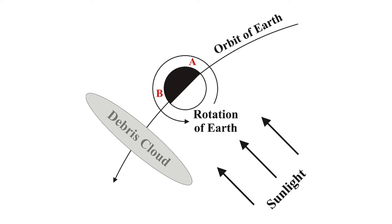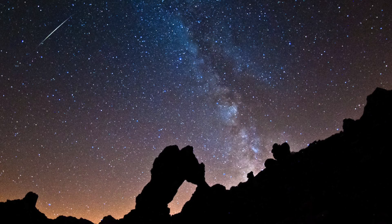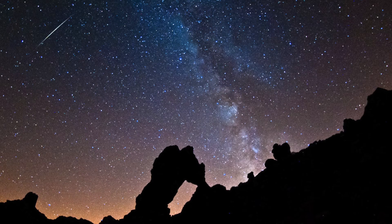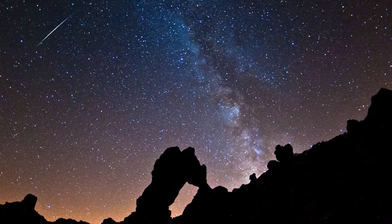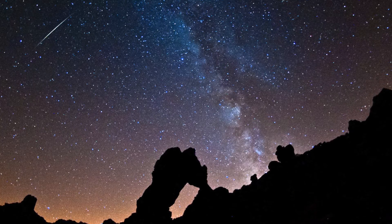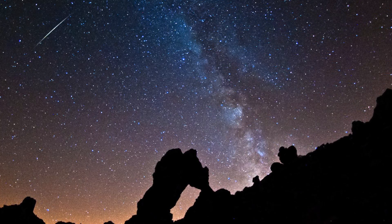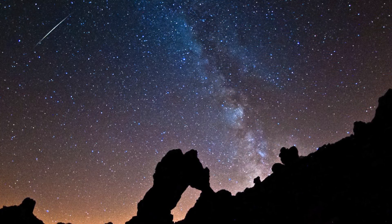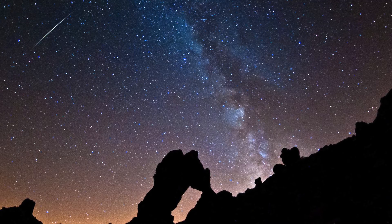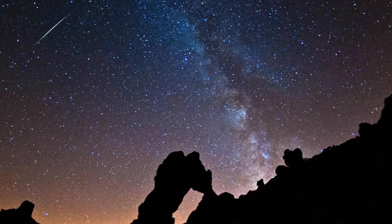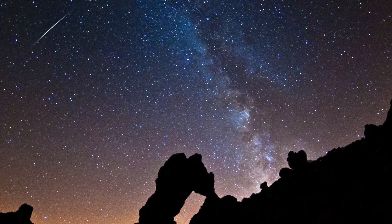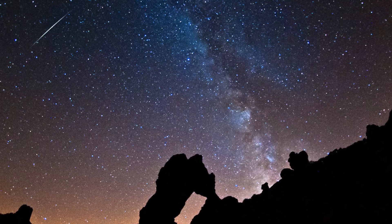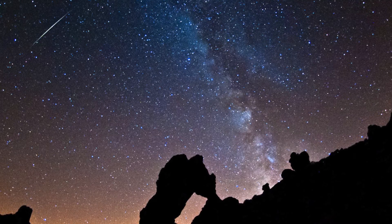On any night on planet Earth, there are several small meteor showers that occur across the night sky. However, during a meteor shower, tens to hundreds of meteors can actually be seen each hour. Many of these meteor showers can actually be predicted and can occur at the same time each year, because of the orbit of the comet.